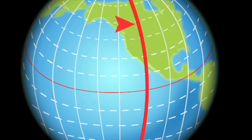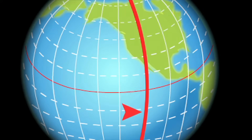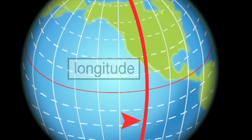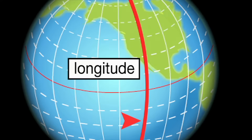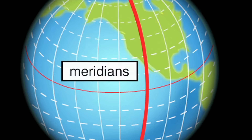Sometimes lines of latitude are also called parallels. The lines that run up and down a globe from the North Pole to the South Pole are called lines of longitude. Some people remember this by remembering that they are long lines, and longitude starts with the word long. Sometimes longitude lines are also called meridians.